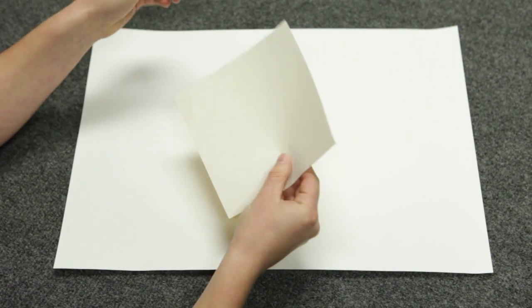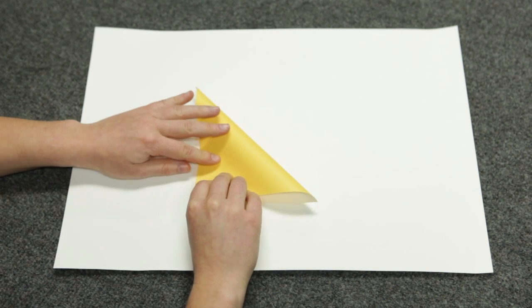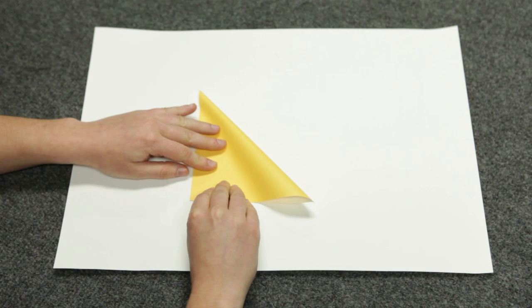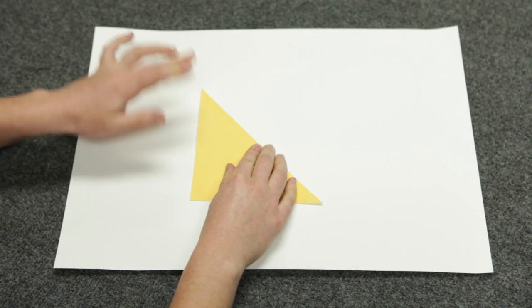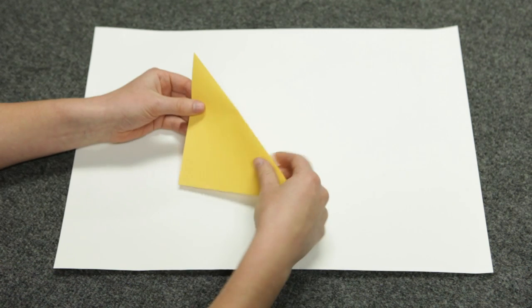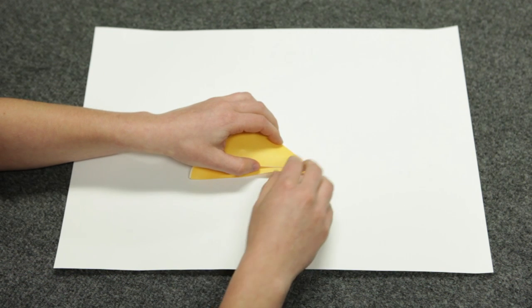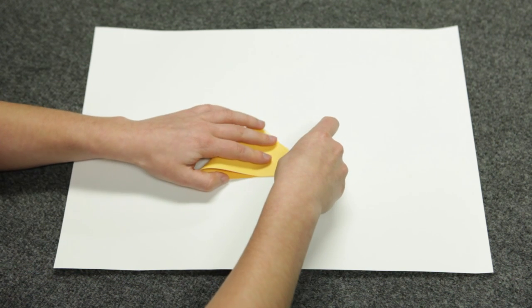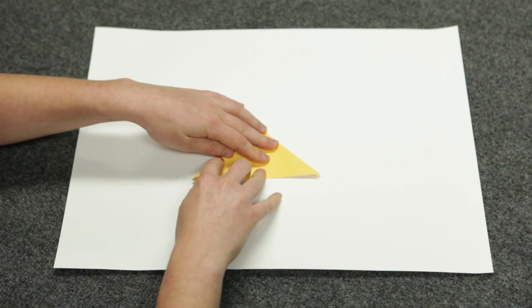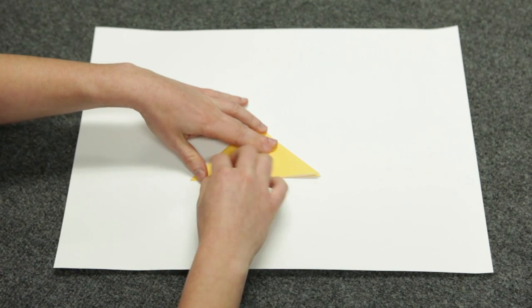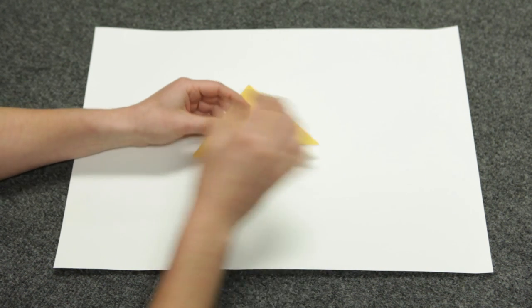We'll start by folding a single piece of paper in half diagonally into a triangle. Then fold it in half diagonally again. Your paper should look like this.